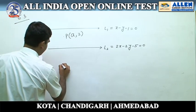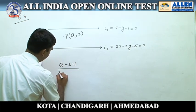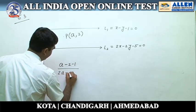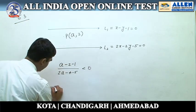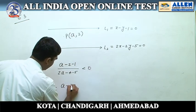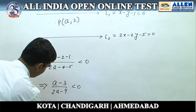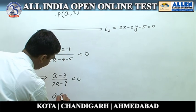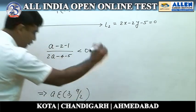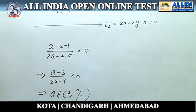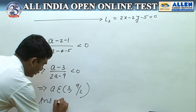The condition for this is (A minus 2 minus 1) upon (2A minus 4 minus 5) less than 0. This gives (A minus 3) upon (2A minus 9) less than 0, which implies A belongs to (3, 9/2). Answer is option number 2.